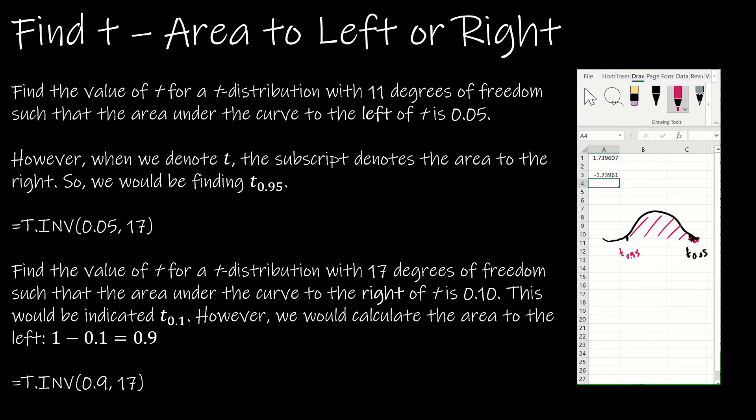This guy is t of 0.95 because all of this would be 0.95. We want to find essentially the t-score, just like a z-score, but these are going to be opposite. This is the negative 1.73961 and this is the positive 1.73961.